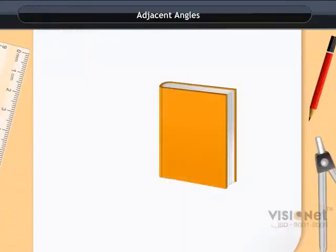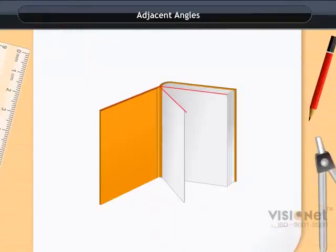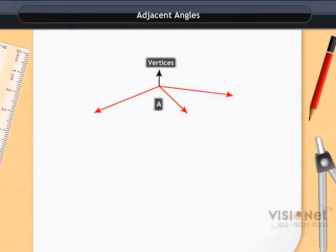Adjacent angles. When you open up a book, angles appear there. In A and B, we find a pair of angles placed next to each other. Such pairs of angles are called adjacent angles.